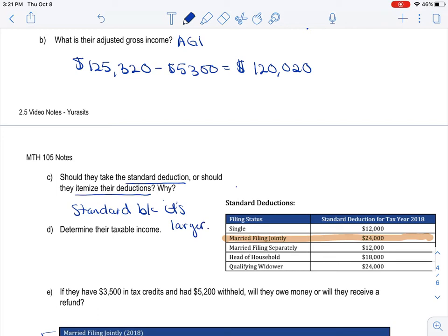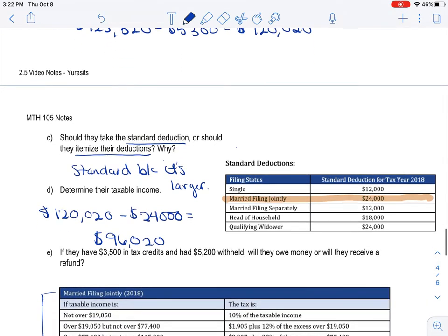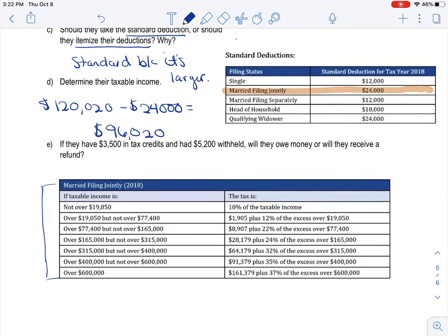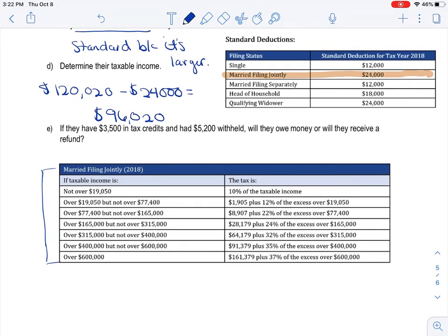Determine their taxable income. So I'm going to take their AGI. And I'm going to take away the deduction. And we get, let's see, $96,020. Okay, so that's their taxable income. So now, what we're going to do is we're going to hold off on reading E for a second. And we just have to figure out how much they owe in taxes like we did in the previous problem.